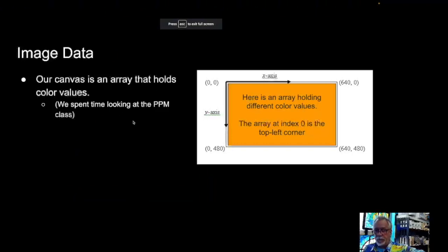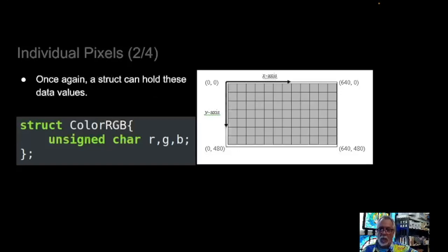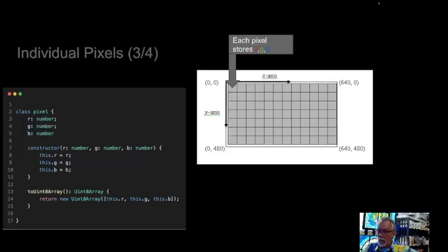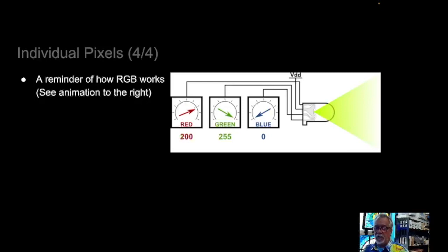Each pixel is going to have an RGB value, and the red, green, and blue each have eight bits, so they range from zero to 255. In C++, or in TypeScript, you could build something like this. For the purposes of what we're doing, we're actually going to be using a Uint8Array. What I've defined here is an individual pixel — I can set RGB, and I can also get the data out in an unsigned 8-bit array, which is what we're going to be feeding into our graphics section. Just a reminder: if you watch this video for a bit, you can see how RGB works.